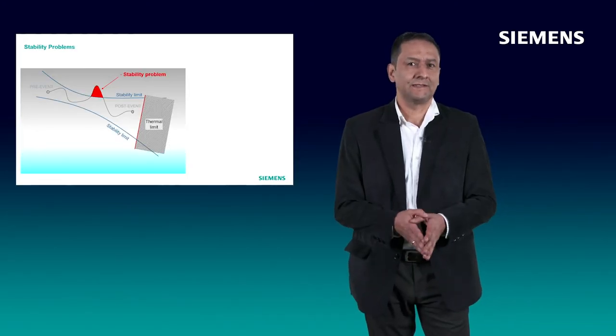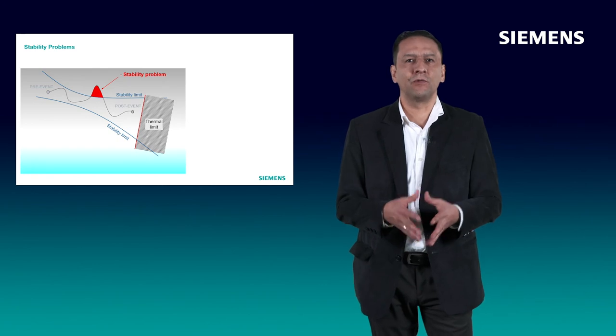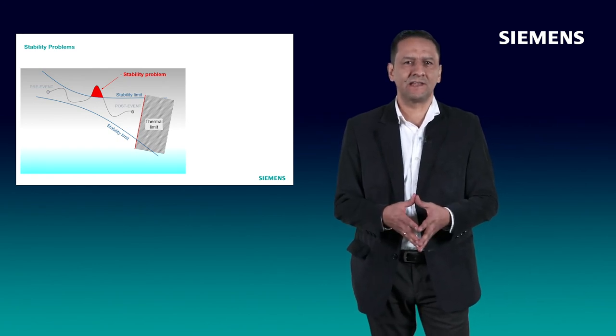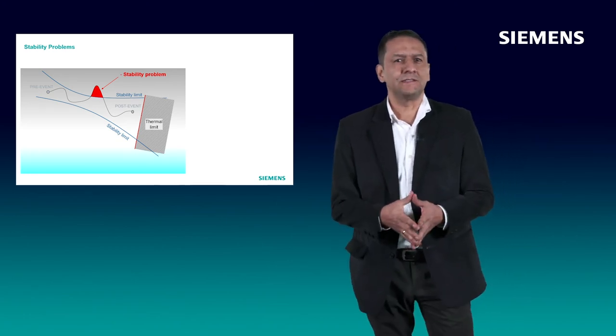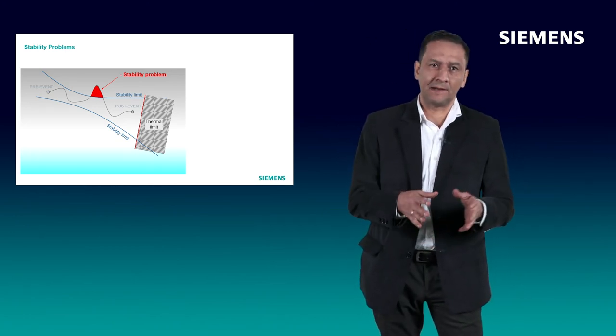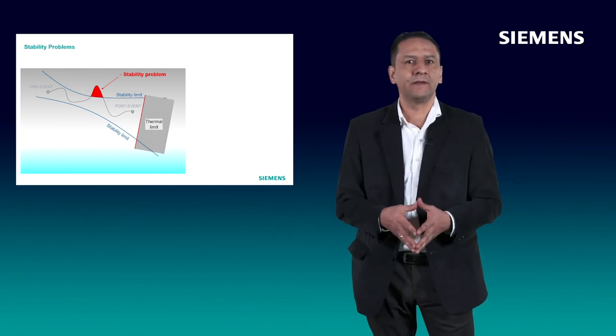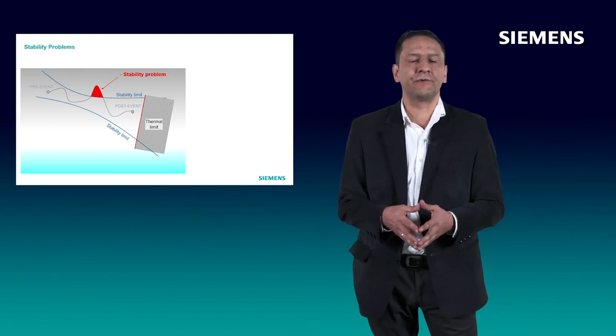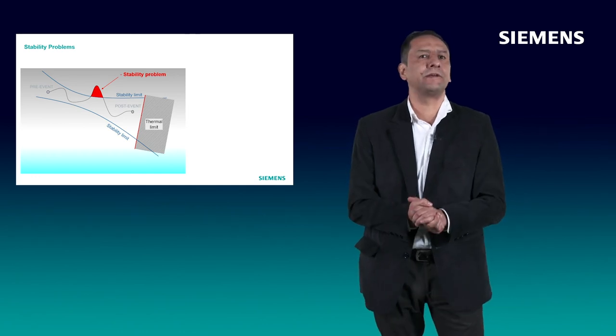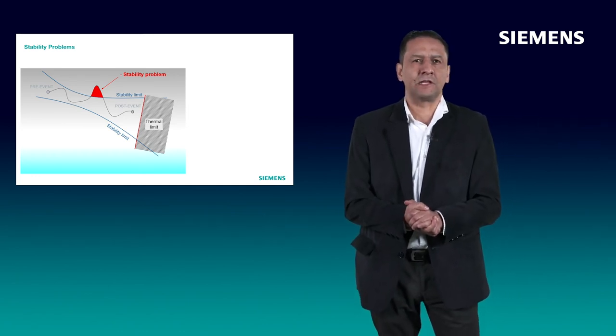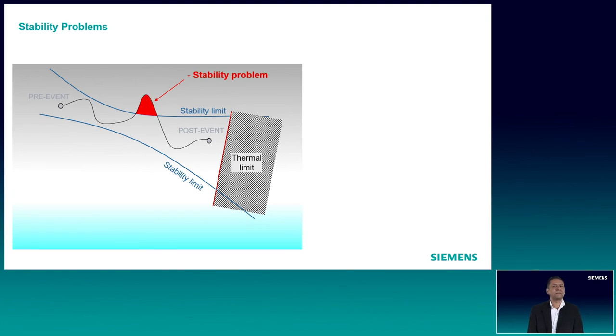For this use case, the idea is to try to solve problems related to power system stability based on phasor measurement units. With some contingencies in the power system, for example when one line is tripped, it could happen that the system reaches stability limits, as you can see here in the presentation. To avoid that the system reaches these limits, sometimes it's necessary to make big investments in the power system.